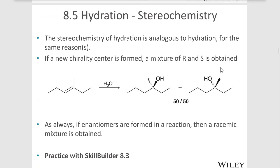So we talked about regiochemistry in this reaction. The next thing to consider is stereochemistry. The stereochemistry of hydration is analogous to hydrohalogenation where we had a racemic mixture produced. So if we produce a chiral center, then we get a racemic mixture. Here we have the alkene on the left; we have H₃O⁺, which remember is the same thing as sulfuric acid and water — you can see either of these as your reagent over the arrow. And that gives us a 50-50 racemic mixture, a 50-50 mixture of enantiomers as products.